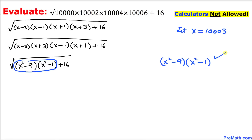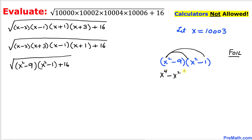Now let's focus on the expression inside the radical and use the FOIL method — double distribution — to multiply (x² − 9)(x² − 1). That gives us x⁴ − x² − 9x² + 9. Combining the like terms, we get x⁴ − 10x² + 9.